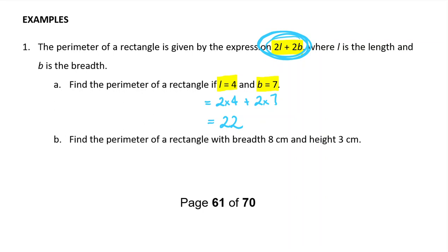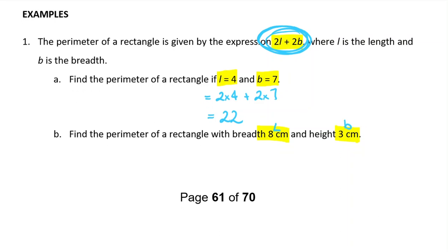Part B: Find the perimeter of the rectangle. Again, this time the breadth is 8 and the height is 3. Breadth and height weren't really the things that L and B were using in the last one, but it doesn't really matter what we call them, as long as we know what the sides of our rectangle are. So I'm going to call the 8 the L and the 3 is going to be the B.